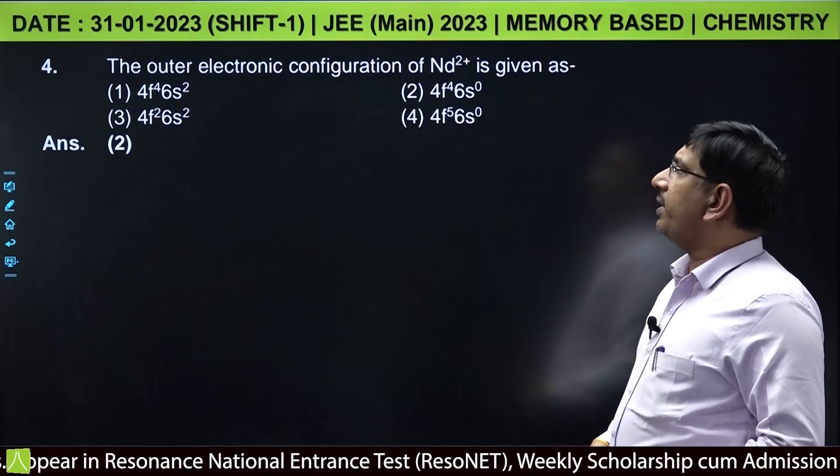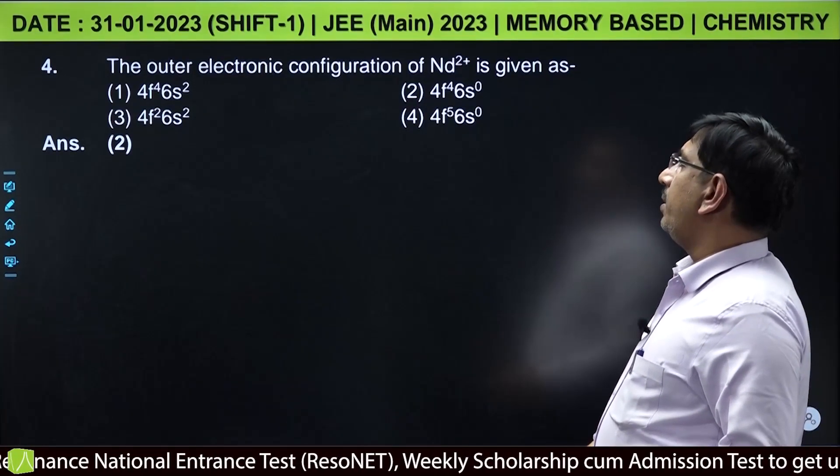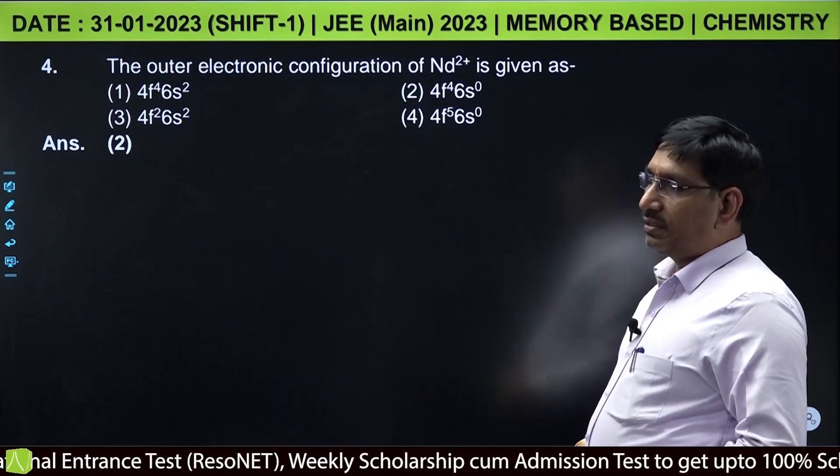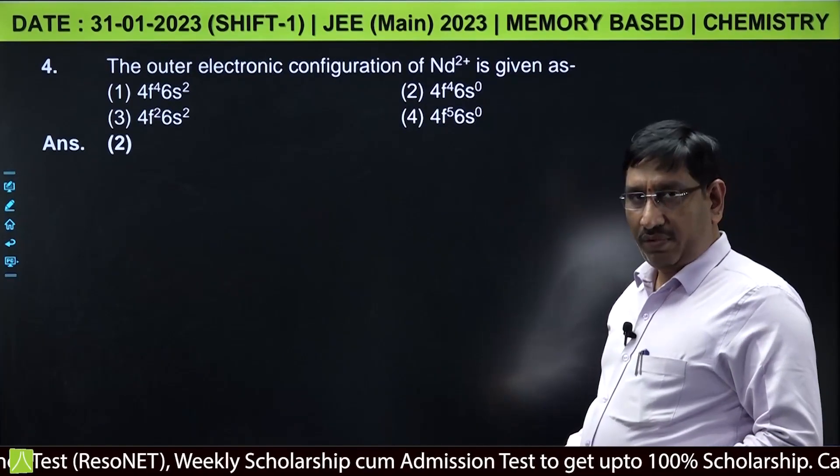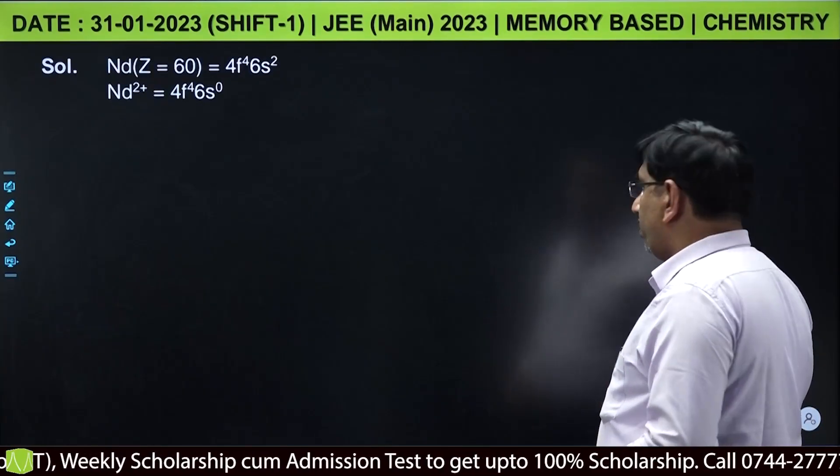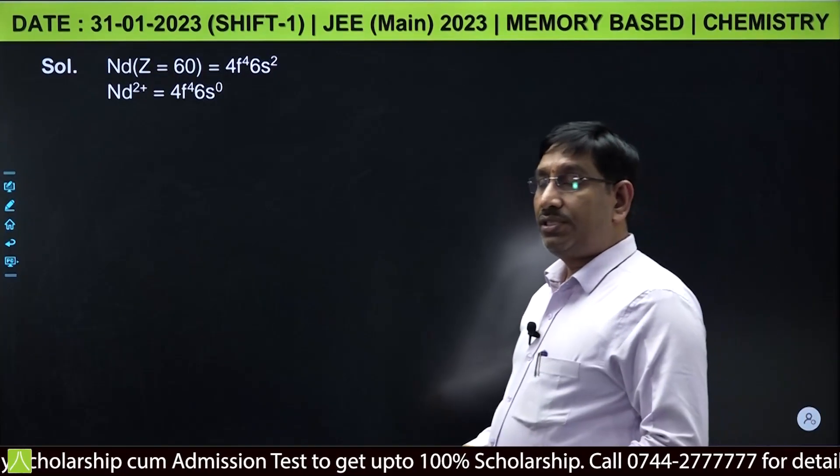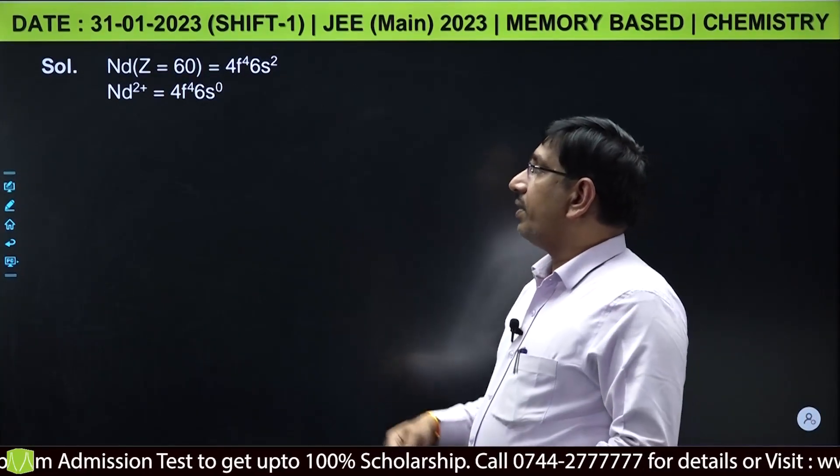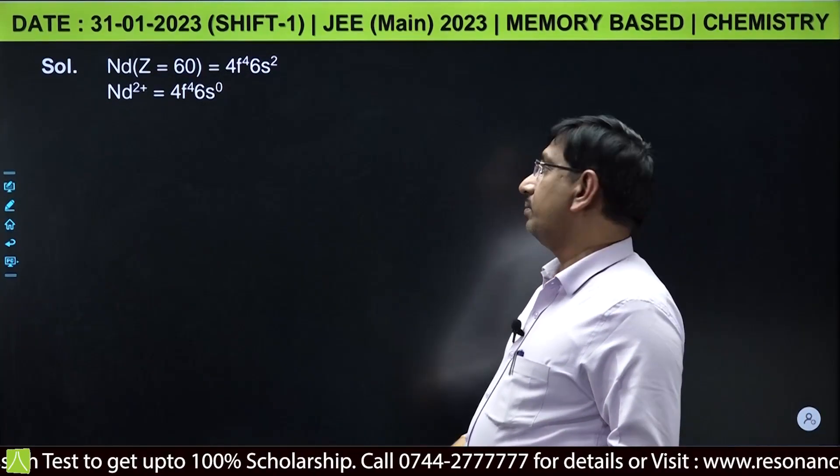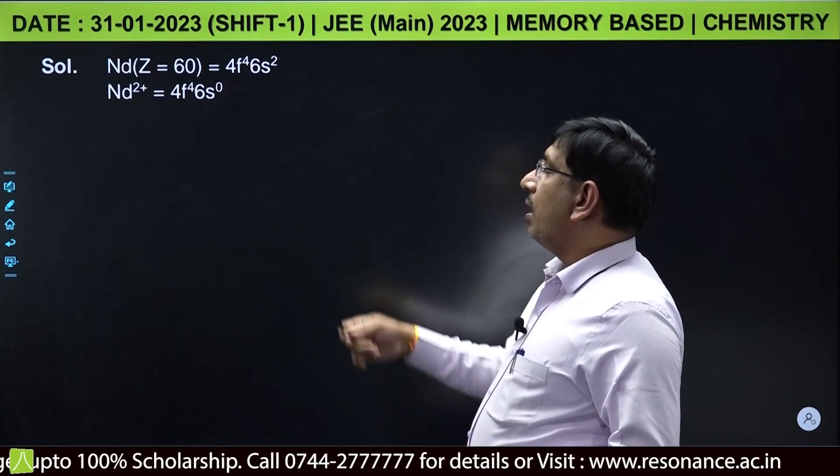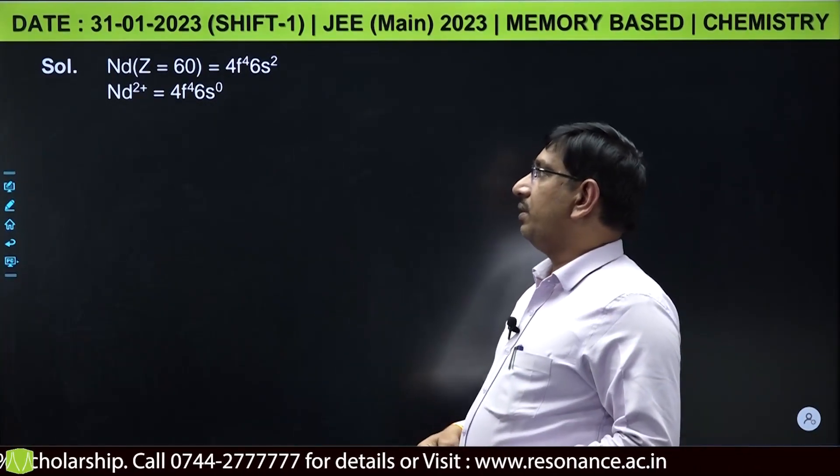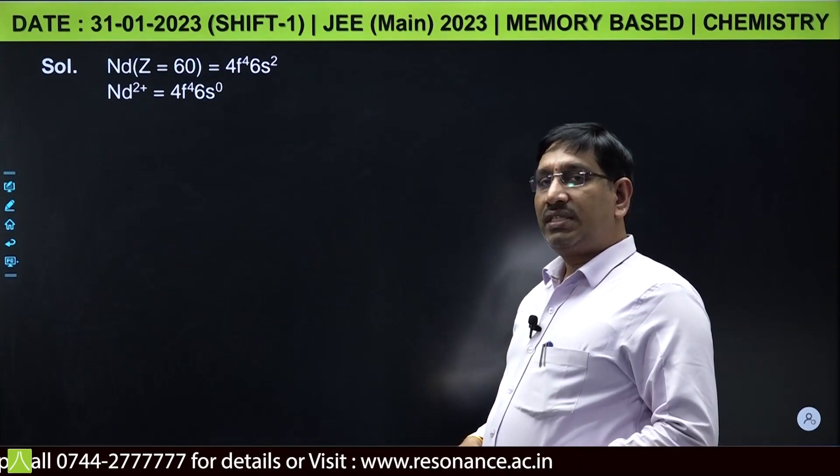The outer electronic configuration of neodymium 2 plus is given as. This is from f block, and neodymium 2 plus, Z equal to 60, and its outer configuration is 4F4, 6S2. And neodymium 2 plus is 4F4, 6S0.